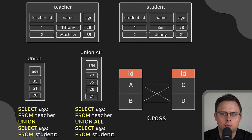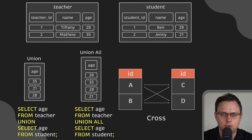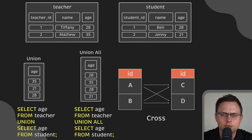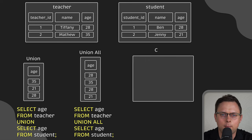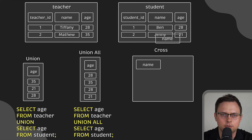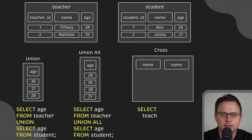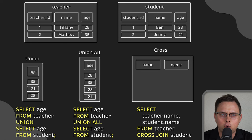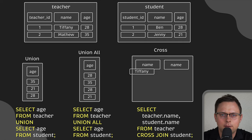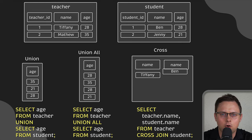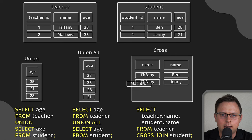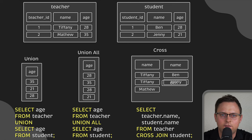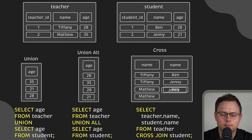Finally, the fifth most common type of join in SQL is a cross join. A cross join does not look for matches between any values in two datasets. Instead, for each row in the first table, every row of the second table will be attached to it and added to the final table one by one.